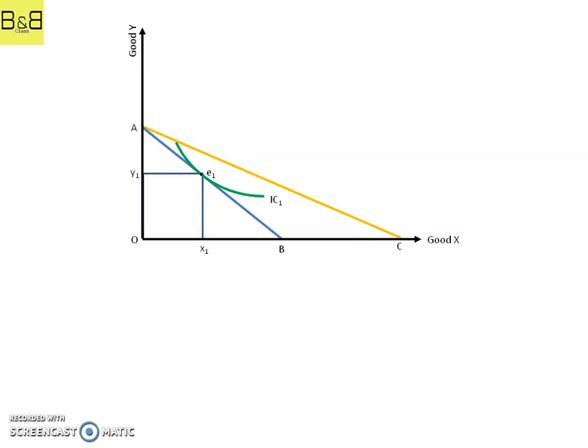Since the real income of the consumer is increased due to income effect, the consumer will find its new equilibrium on a higher indifference curve. Let us suppose the indifference curve is IC2 and at point E2, the consumer finds its equilibrium, whereby the consumer is consuming more quantity of good x and good y as well.